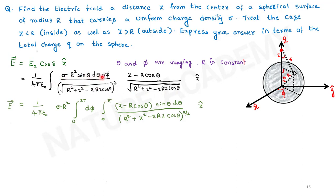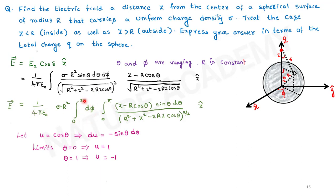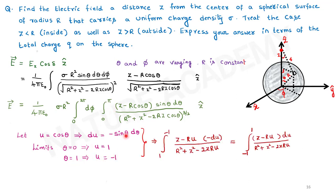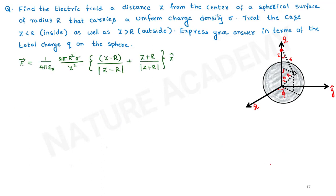The phi integral gives 2π. For the theta integral, substitute u equals cos theta, so du equals –sin theta d-theta, with limits changing: theta = 0 gives u = 1, theta = π gives u = –1. Evaluating the integral and substituting back into the electric field expression gives the result for both the inside and outside cases.